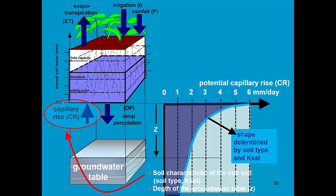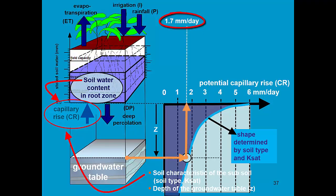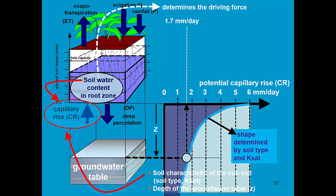For example, when the groundwater table is at Z meters below the root zone, the potential capillary rise is 1.7 mm per day for this soil type with that particular Ksat. If 1.7 mm per day is really transported upwards depends on the soil water content in the root zone.